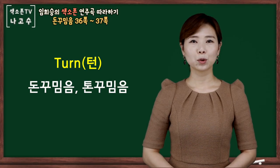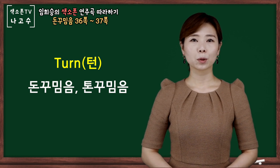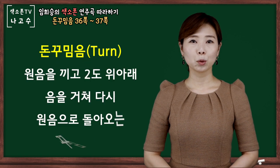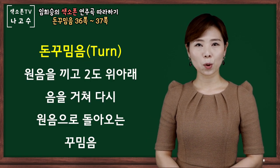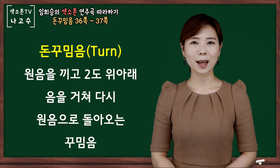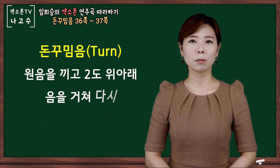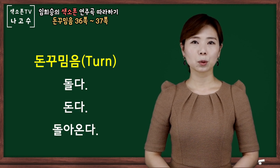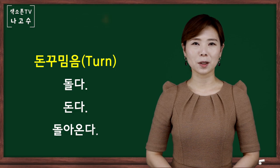돈 꾸밈음은 돈 꾸밈음이라고 하는데 주로 돈 꾸밈음이라고 많이 들어보셨을 겁니다. 돈 꾸밈음은 원음을 끼고 위아래음을 거쳐 다시 원음으로 돌아오는 형태의 꾸밈음입니다. 음이 돌다, 돈다, 돌아온다 라는 의미로 돈 꾸밈음입니다.